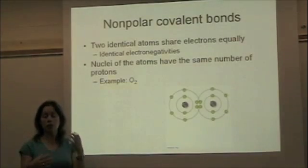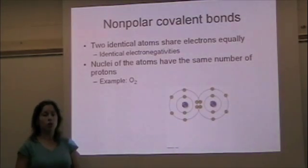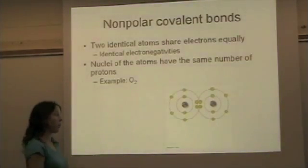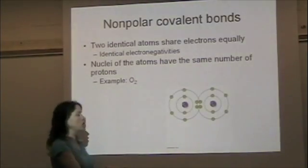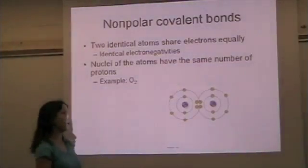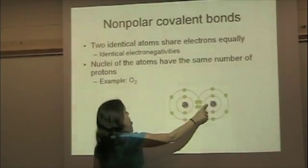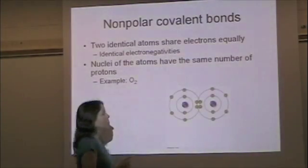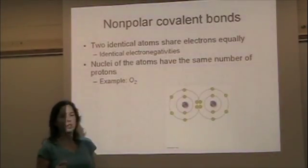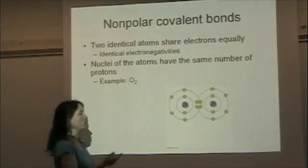The electrons will be attracted equally to both nuclei. So here we have oxygen gas. This is a non-polar covalent bond. Each oxygen has eight electrons, sorry, eight protons in the nucleus.